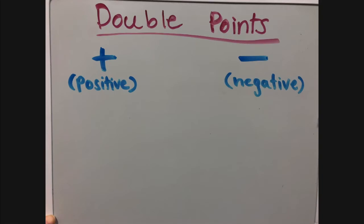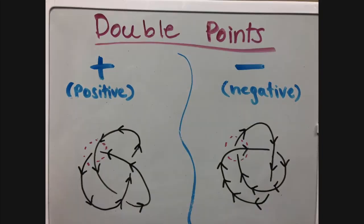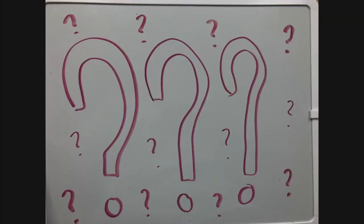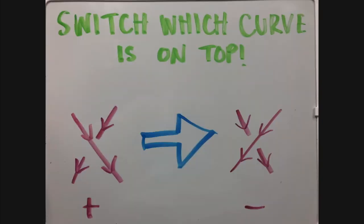Each double point is assigned a positive or a negative sign depending on the orientation. If you turn the curve on top less than 180 degrees clockwise to match the curve on the bottom, then the sign is positive. And if you turn the curve on top less than 180 degrees counterclockwise to match the curve on the bottom, then it's a negative sign. The only way we untie these knots is by removing excess double points, which means switching which curve is underneath and which is on top.